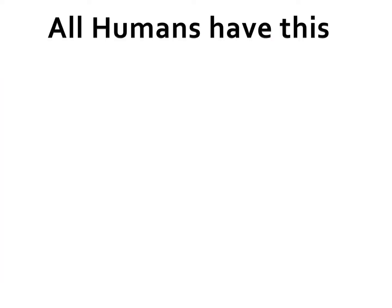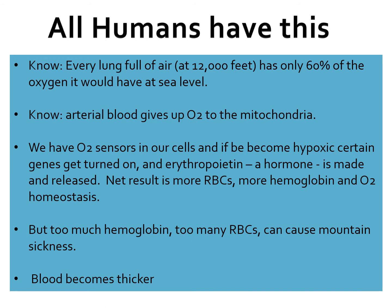Every lungful of air at 12,000 feet has only 60 percent of the oxygen it would have at sea level. Arterial blood gives up oxygen to your mitochondria to produce energy. In our cells we have O2 sensors, and when they become hypoxic, certain genes in our genome get turned on and erythropoietin — a hormone — is made and released. The net result is production of more red blood cells and more hemoglobin, meaning more O2 saturation and oxygen homeostasis. However, too much hemoglobin and too many red blood cells can cause mountain sickness because the blood becomes too thick.